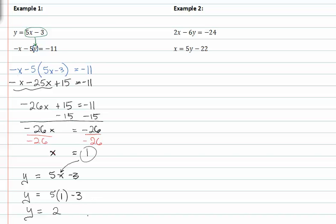So my coordinate point is one comma two. Notice I put x first, then y and I write it as if it's a coordinate point, because remember we're finding where two lines intersect on a graph.